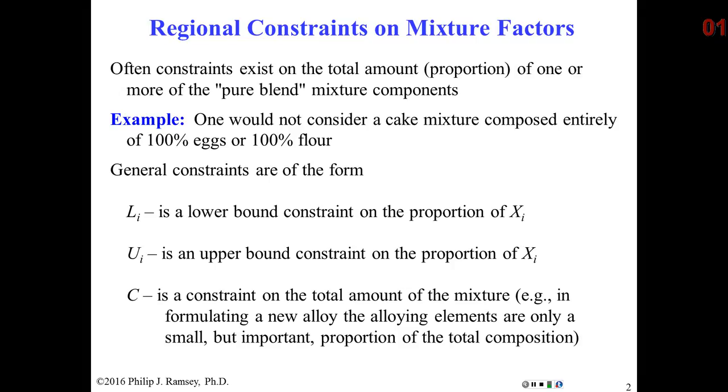Well, I think you'd agree you couldn't do a mixture run in which it was 100% eggs, or 100% flour, or 100% milk. In other words, there have to be constraints on the ingredients, one or possibly all of them. And there are three forms of constraints, and we often call these regional constraints.